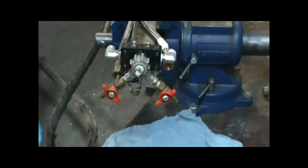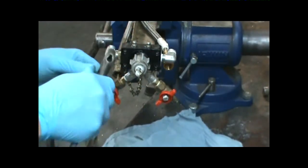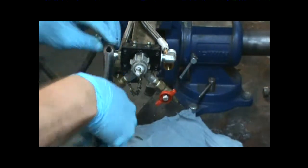After the hoses are removed, we're going to remove the manifold elbows simply by using a crescent wrench.